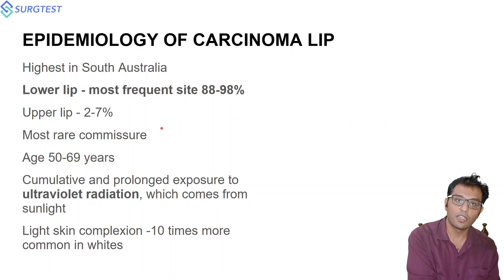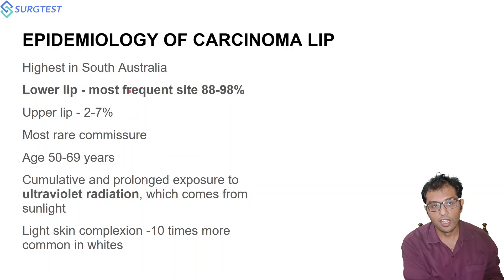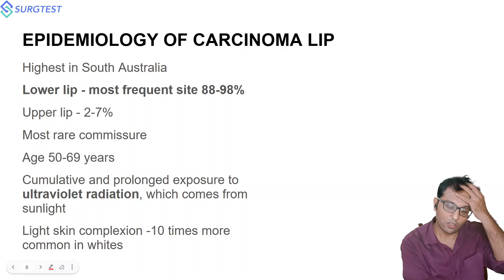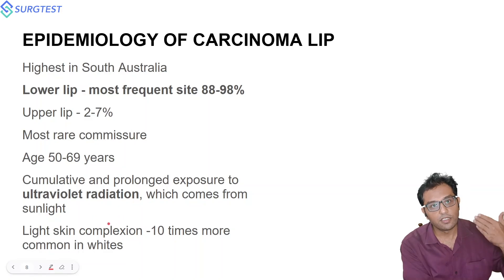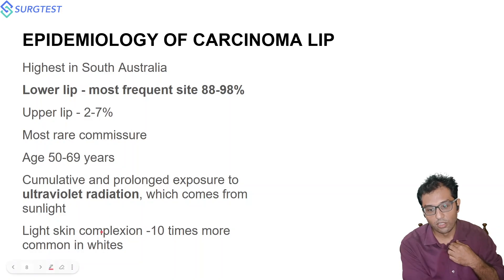Coming to the epidemiology of carcinoma of the lip: it mostly occurs in areas with high sunlight exposure. The highest incidence occurs in South Australia. Since the lower lip is more exposed to sunlight than the upper lip, the lower lip is the more frequent site — frequency of cancers in the lower lip is around 88 to 90 percent, whereas the upper lip is only around 2 to 7 percent, with rarely the commission area involved. The age group for lip cancers is 50 to 69 years.